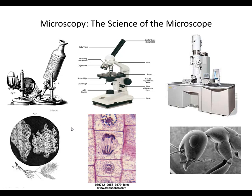The microscope in the middle is the kind we will be using in class — it's called the compound light microscope. It allows us to see fairly good cellular details, and we can magnify objects up to about 400 times. To the right we have what's called an electron microscope. Electron microscopes are extremely special — they allow us to magnify hundreds of thousands of times to produce extremely vivid images of very minute details.